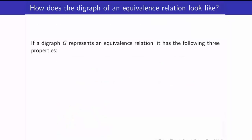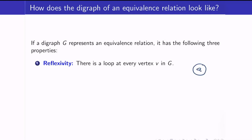How does the digraph of an equivalence relation look like? First, an equivalence relation is reflexive. So therefore, there should be a loop at every vertex in your graph. So if we have this element A, we know that there should be a loop.